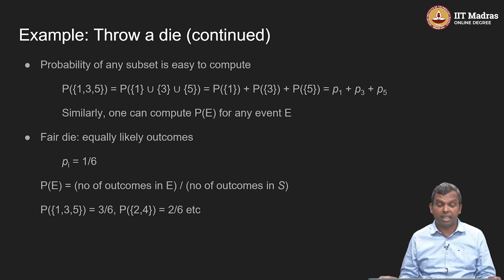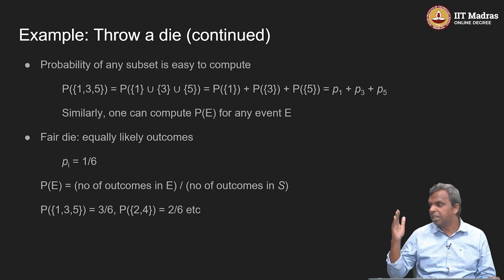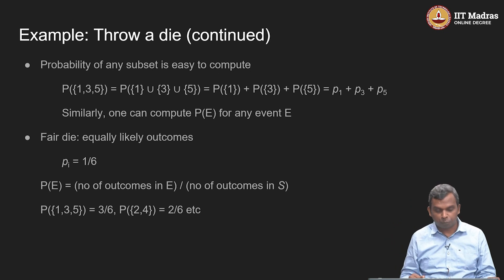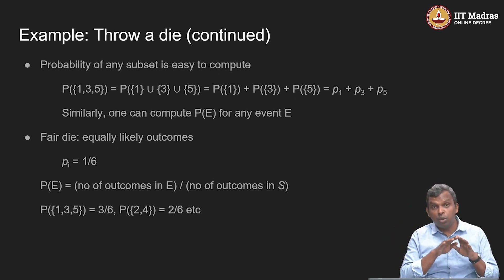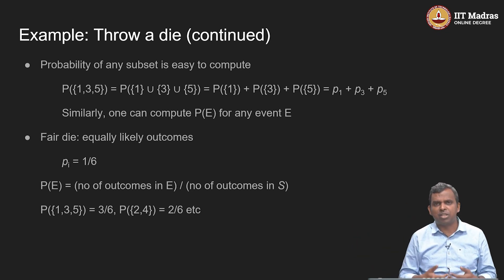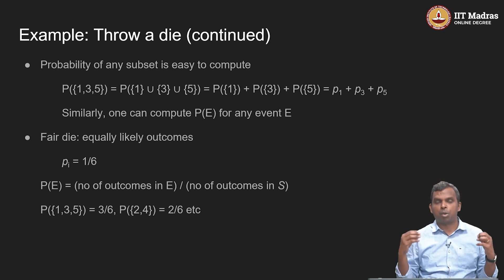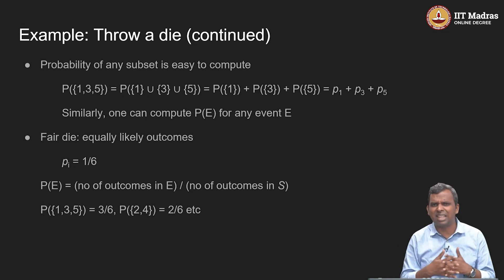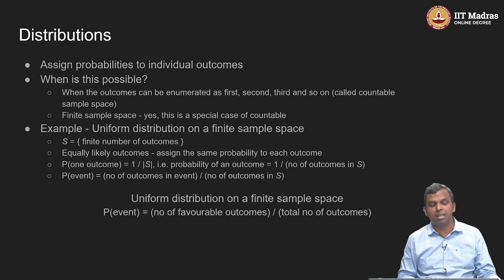Let us specialize to the case where you have equally likely outcomes or a fair die. Each of the pi is 1/6. The probability of the event is just 1/6 + 1/6 + 1/6 — as many times as there are outcomes in that event. So P(E) for any event under the uniform distribution is simply the number of outcomes in E divided by the size of S.